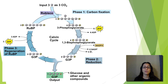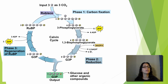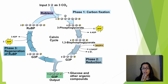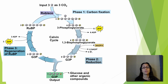In order to really understand what's going on with photorespiration, we have to go back and look at the Calvin cycle because the Calvin cycle is involved with photorespiration. When we look at the Calvin cycle, we see three phases: the carbon fixation phase, the reduction phase, and finally the regeneration phase.